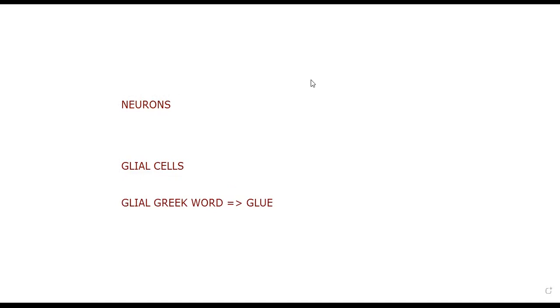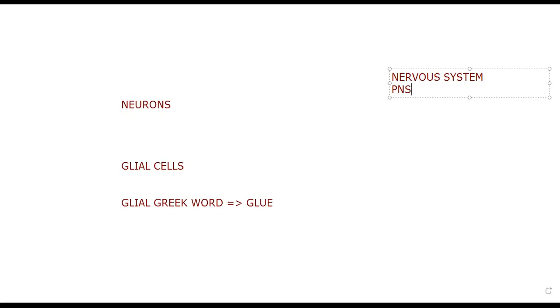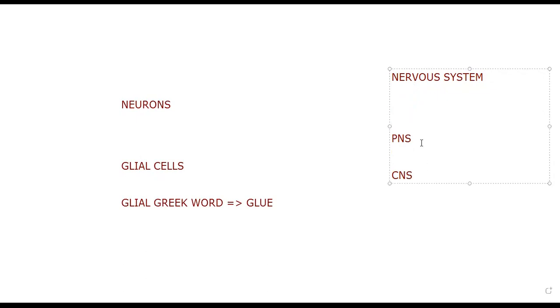The nervous system is divided into the peripheral nervous system (PNS) and the central nervous system (CNS). The central nervous system involves the brain and the spinal cord, while the peripheral nervous system is the rest of the body.